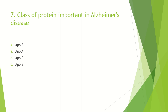The answer is ApoE. In Alzheimer's disease, we have plaques in the brain. If we have plaques in the brain, we can detect enhanced apolipoprotein E. That is why ApoE is associated with Alzheimer's disease.